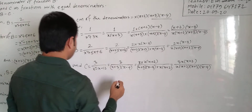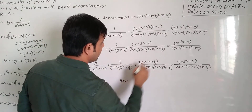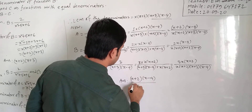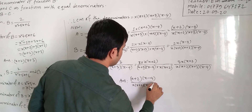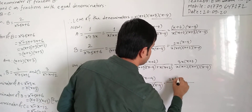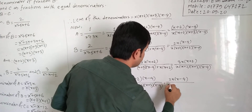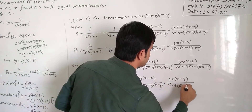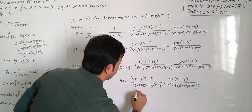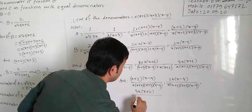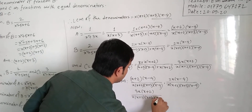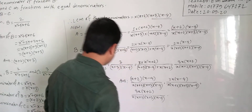The answer for question (b) is: a equals (x + 2)(x - 4) divided by x(x + 2)(x + 3)(x - 4), b equals 2x(x - 4) divided by x(x + 2)(x + 3)(x - 4), and c equals 3x(x + 2) divided by x(x + 2)(x + 3)(x - 4). This is our answer for question (b).